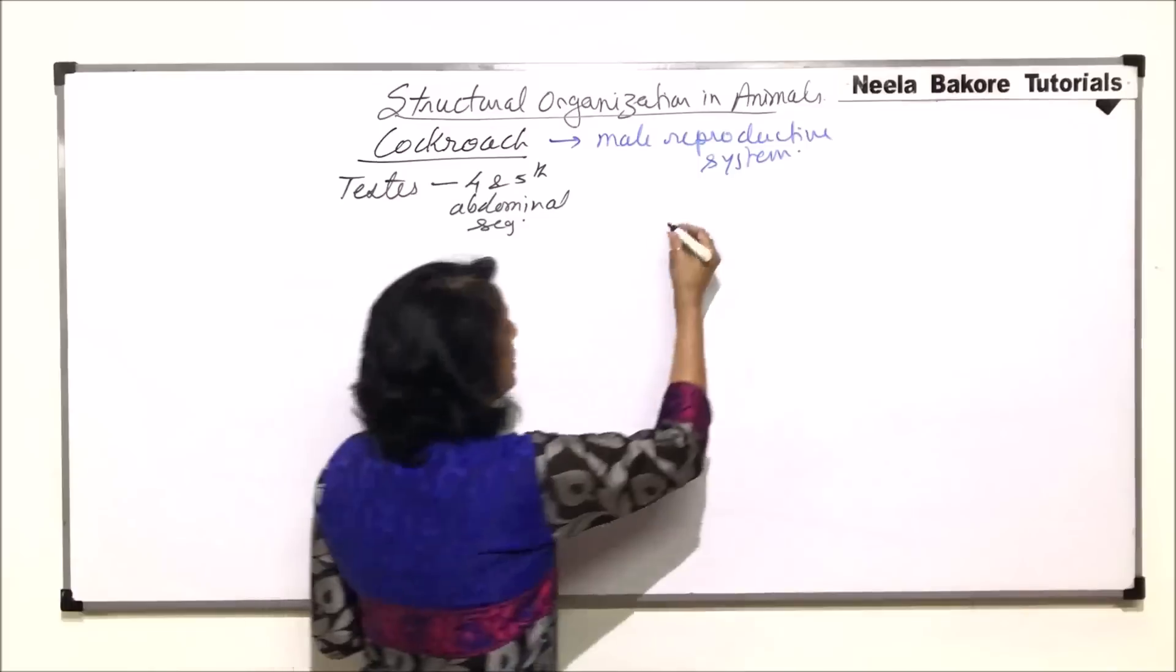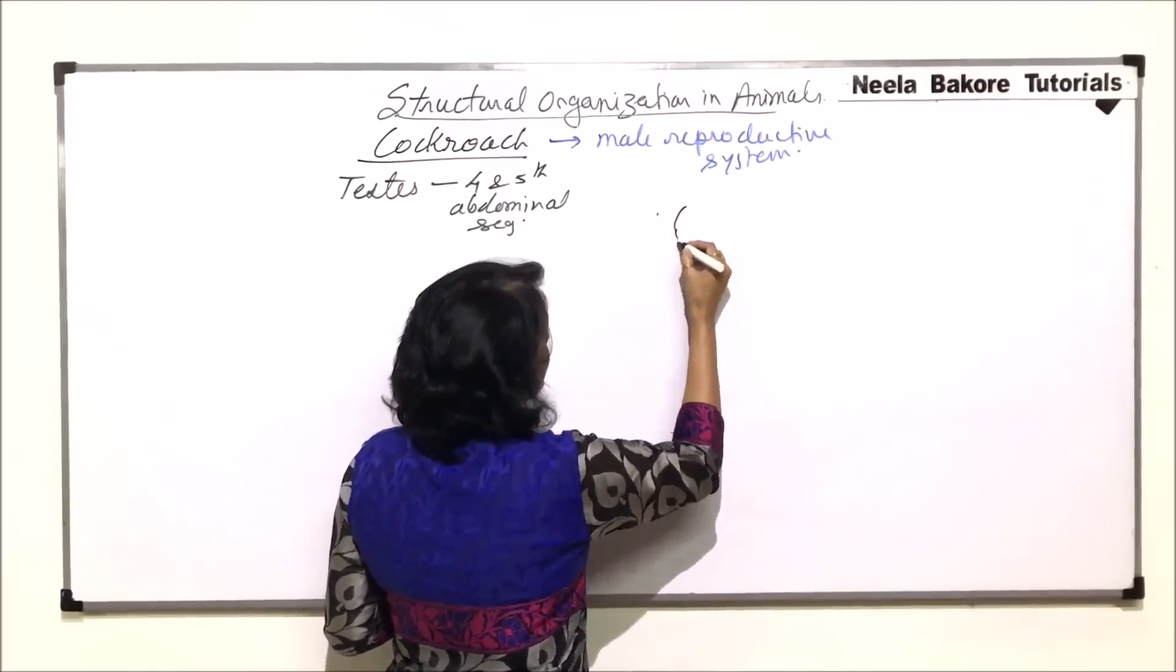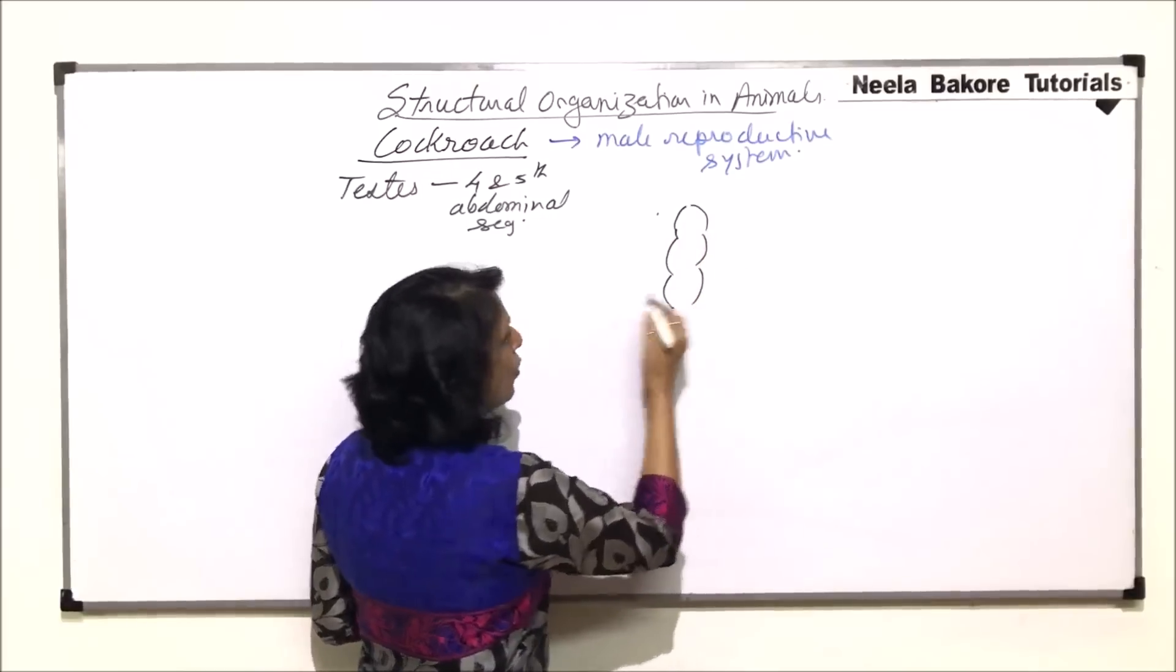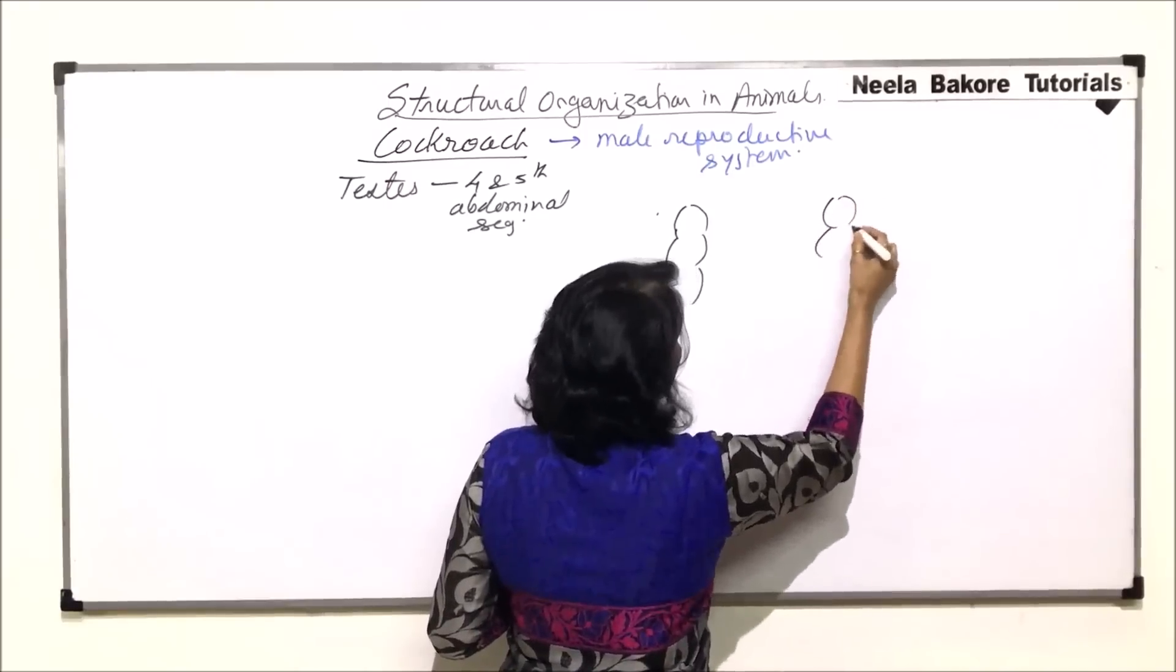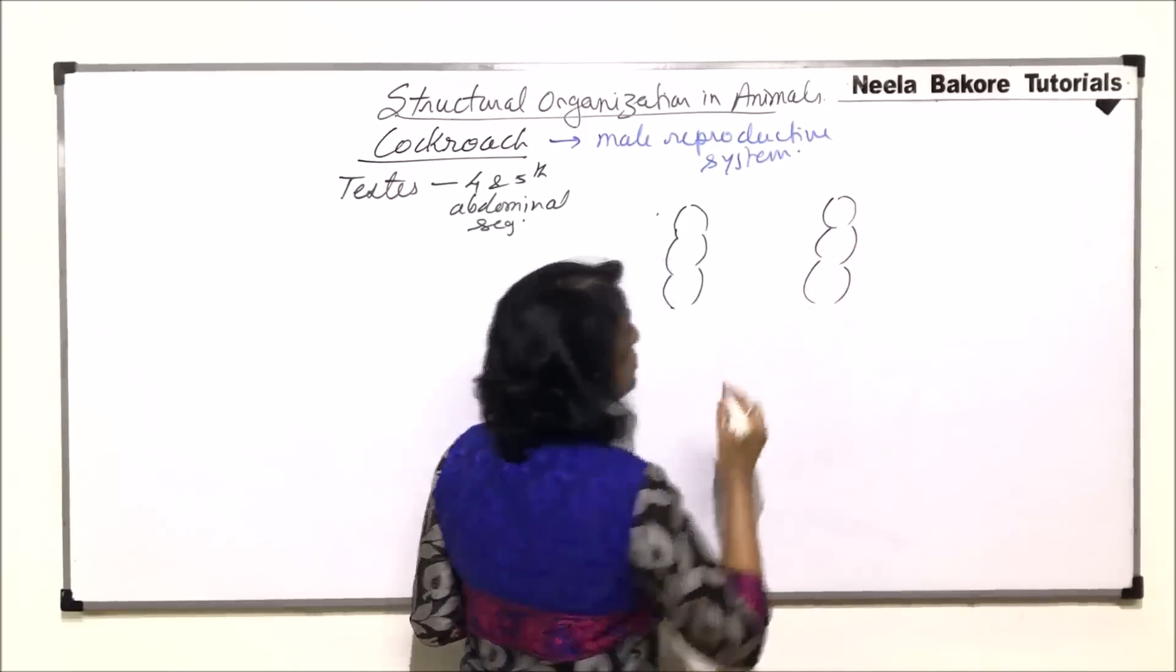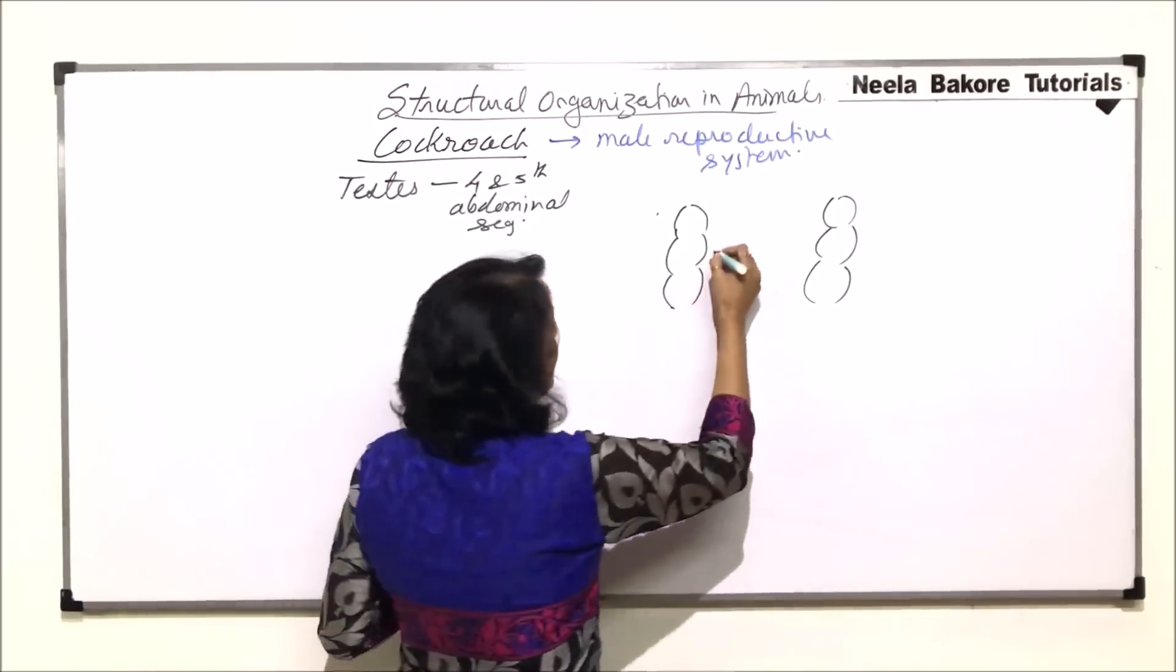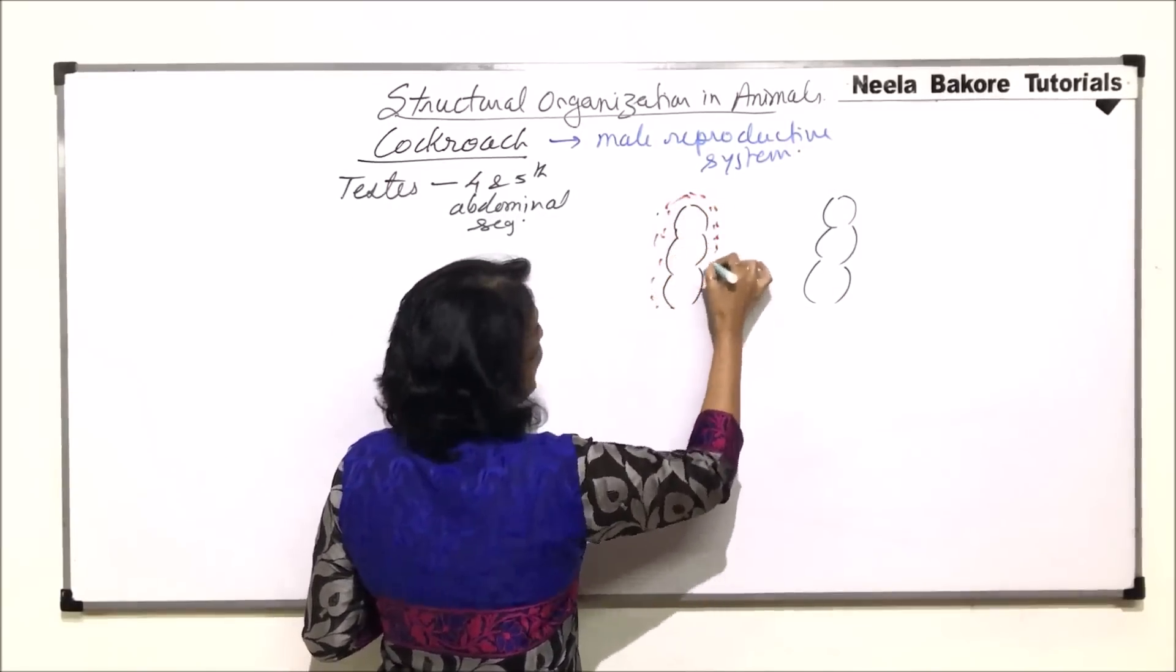So when we draw the diagram, we will just make the abdominal segments. Say this is one lobe, second and third lobe. So these are three lobed testes in the fourth and fifth abdominal segments, and they are buried in the fatty tissue. So all around them is fat which is present.